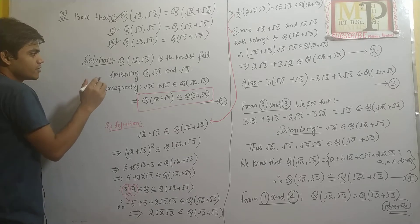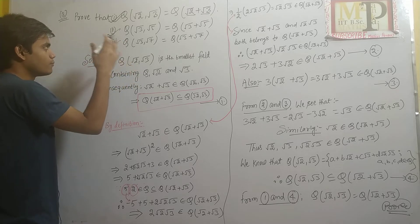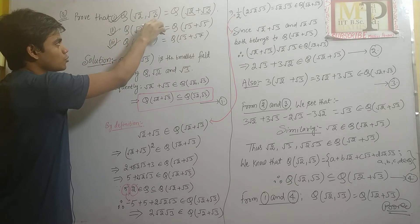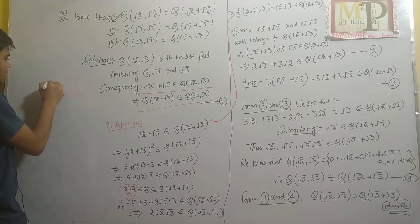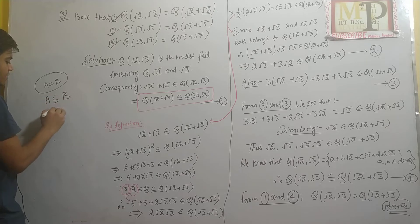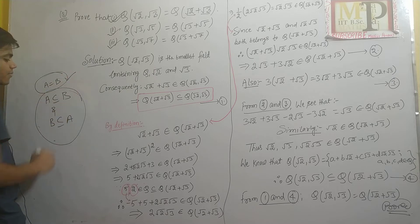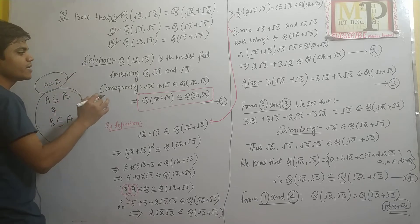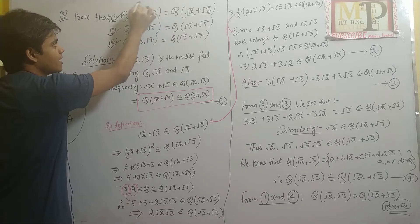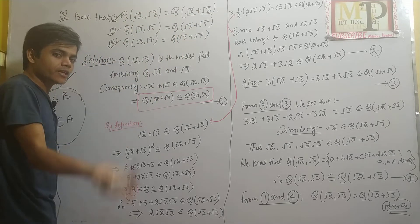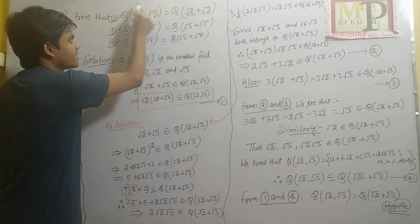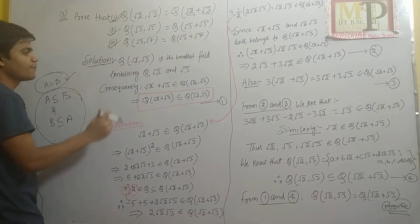Q(√2, √3) = Q(√2 + √3) prove करने के लिए: जब A = B prove करना होता है तो A ⊆ B और B ⊆ A दोनों prove करते हैं। यहाँ भी यही करेंगे — पहले एक field को दूसरे का subset दिखाएंगे, फिर दूसरे को पहले का subset।